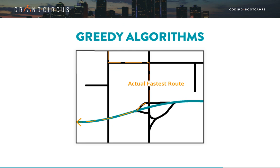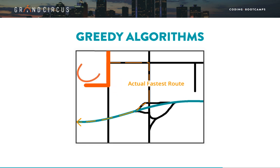You can probably see that our greedy west-only algorithm is unlikely to give us the fastest route to LA. In fact, it will probably run us into a dead end at some point. This particular greedy algorithm is too simple for the problem.